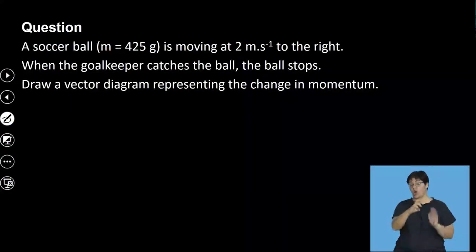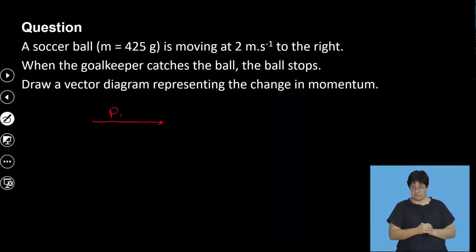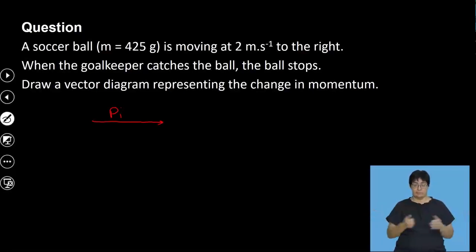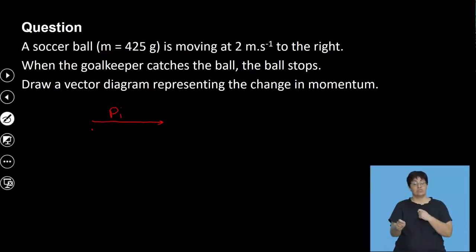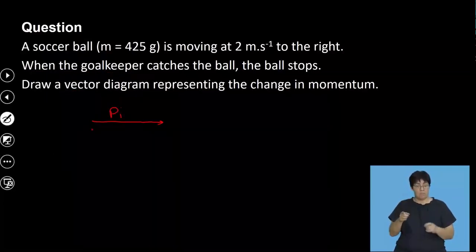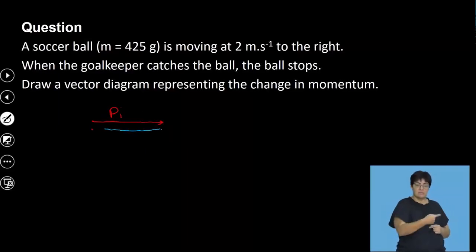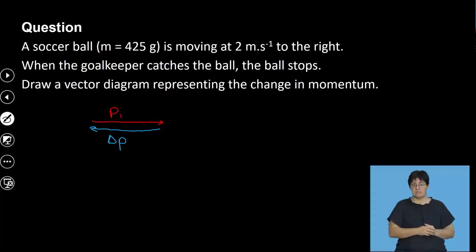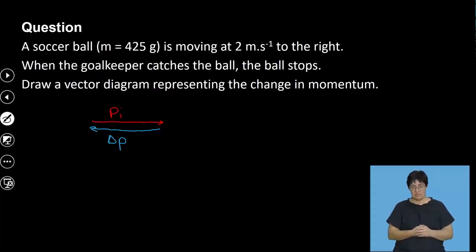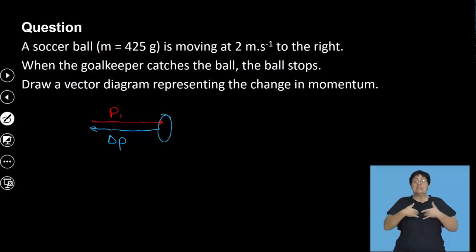Let's look at the diagram. Initial momentum goes to the right. Final momentum is zero — I can't draw a diagram at zero. Now, change in momentum has to go from the start of the initial to the end of the final. It goes backwards. In fact, the change in momentum would have been the same magnitude as the initial momentum, just in the opposite direction. So it goes backwards. The key thing here is where it starts.